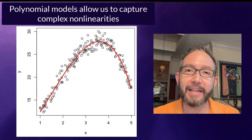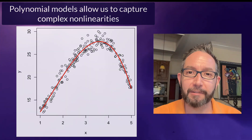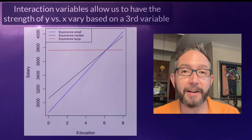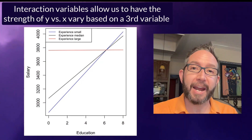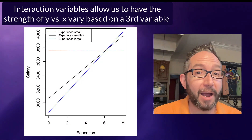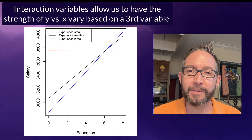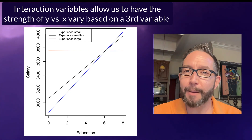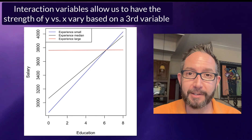In summary, these are two additional ways to add flexibility to regression models. Polynomial models allow us to model curvature and non-linearities in relationships. Interaction variables allow us to model the possibility that the strength of the relationship between y and an x variable isn't the same for all individuals — it may vary based on the values of other individual characteristics.